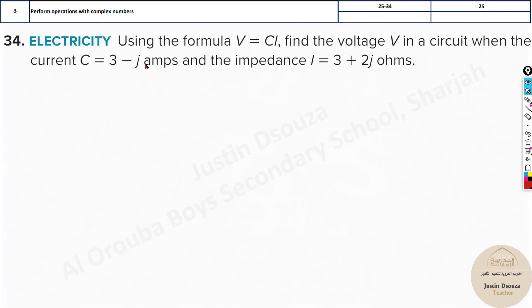Now the last one is the real world problem using the formula V equals CI. Find the voltage in the circuit when the current C = 3 − i amps and the impedance I = 3 + 2i ohms. So impedance is the resistance. Voltage is equal to current times resistance.